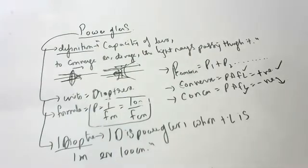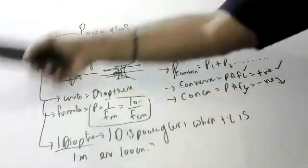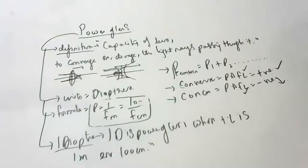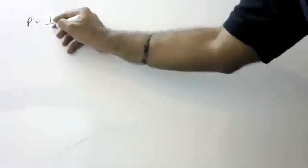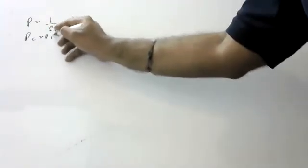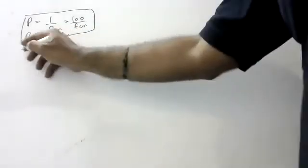Now we will do some numericals based on power. All these topics are very important. I will give the notes in the video description. Now we will do five or six numericals on power. The power formula is P = 1/f in meters or P = 100/f in centimeters. The power of combination is P1 + P2.